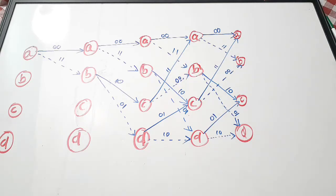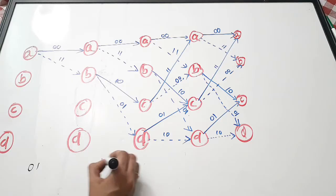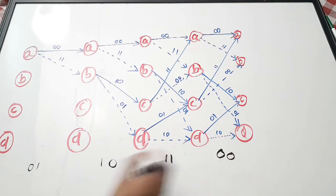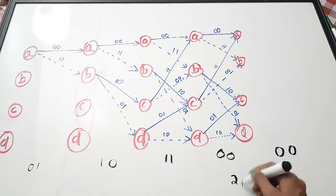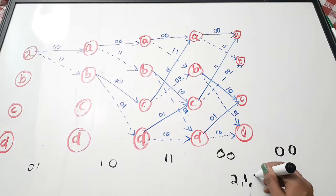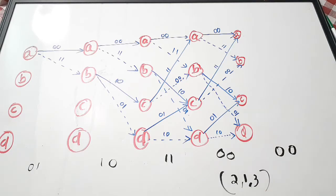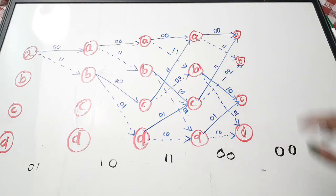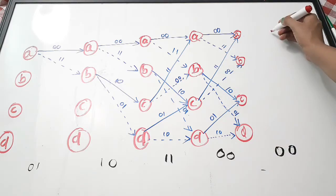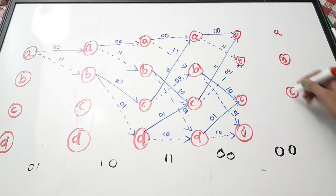The received sequence is 0 1, 1 0, 1 1, 0 0, and then 0 0. We are actually going to decode 2 bits per level. This is a (2,1,3) convolutional code and its Trellis diagram is present. Since we have 0 0 at the end, we need to repeat the Trellis diagram for one more level. So I am going to draw the states A, B, C, and D and repeat the transitions for one additional level.